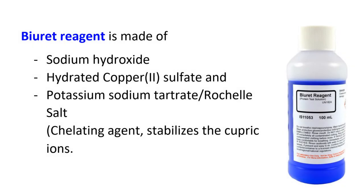The Biuret reagent is made of sodium hydroxide, hydrated copper sulfate, and potassium sodium tartrate. The latter acts as a chelating agent and is added to chelate and thus stabilize the cupric ions.